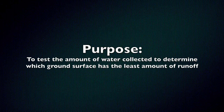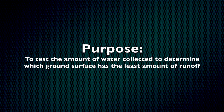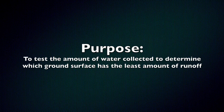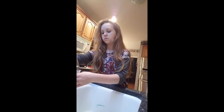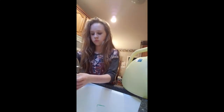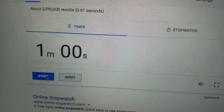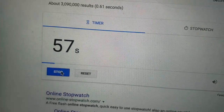The purpose of this experiment was to test the amount of water collected from different ground surfaces in order to determine which surface absorbs the most amount of water and therefore has the least amount of runoff. To conduct the experiment, 1,000 milliliters of water was measured using a 100 milliliter beaker and poured into a gardening can. The water was then poured onto a ground surface. After pouring, a timer was started for one minute while water collected out of a hole in the bottom of the tray. The collected water was measured by pouring into the 100 milliliter beaker.